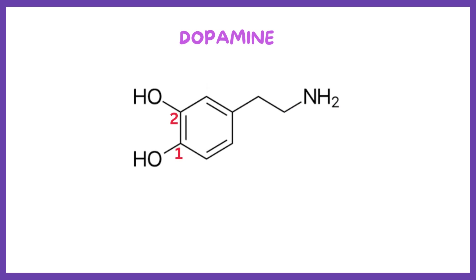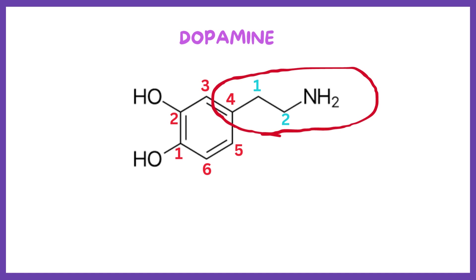Numbering the benzene ring: 1, 2, 3, 4, 5, and 6. The ethyl chain is numbered 1 and 2. On the fourth position of the benzene, there is an ethylamino group. The amino group is present in the second position of the ethyl chain.